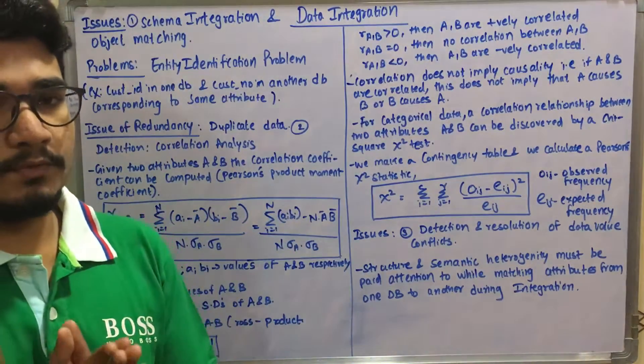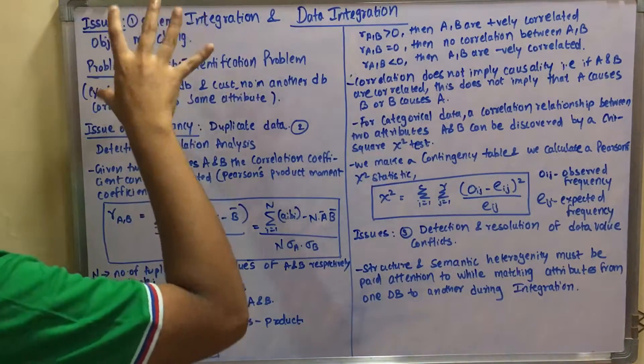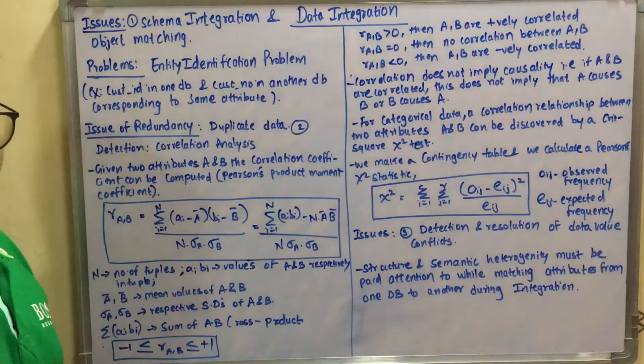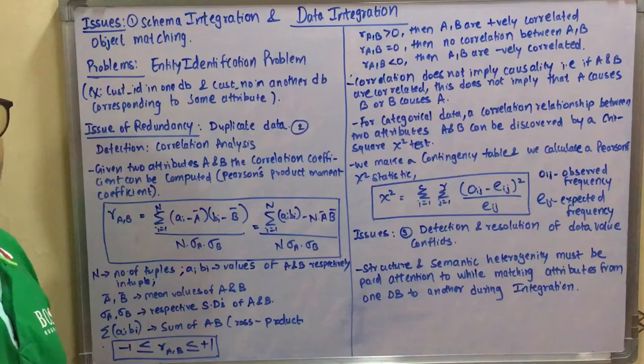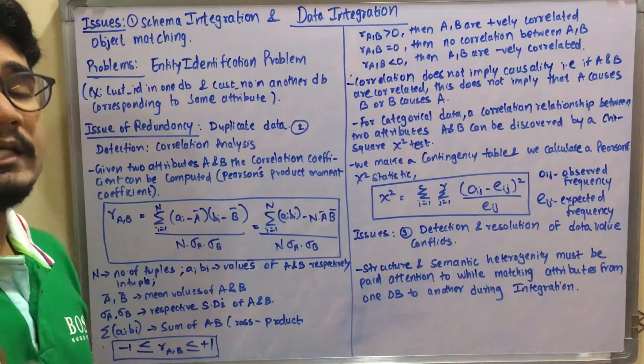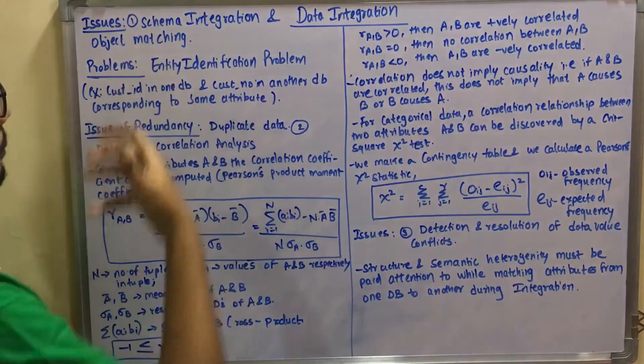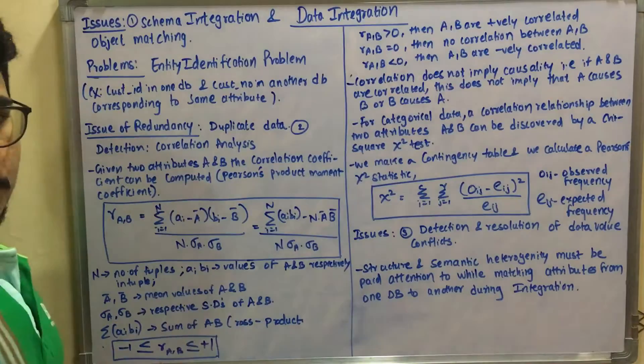First of all, we have four different kinds of issues. We categorize the very first issue as schema integration and object matching. These are identified as problems when you integrate with other databases or schemas from other data mining sites.